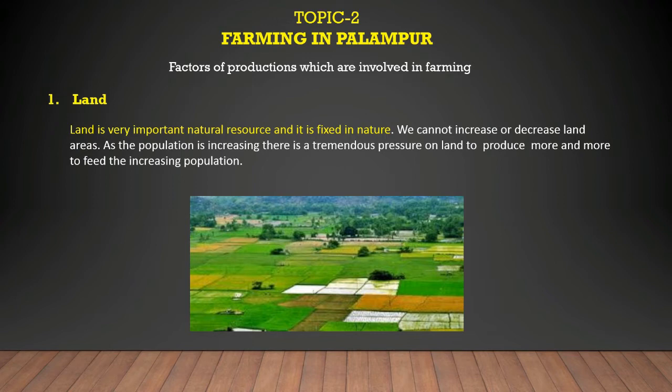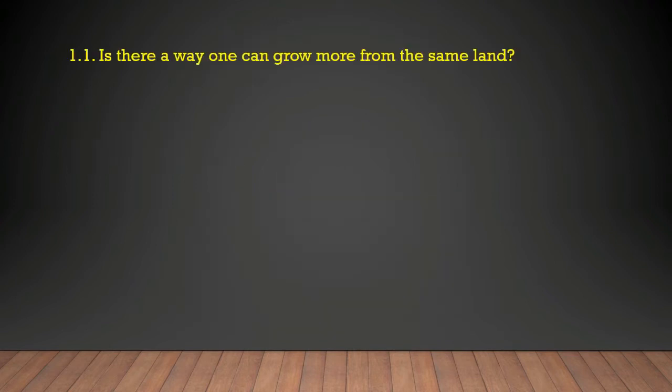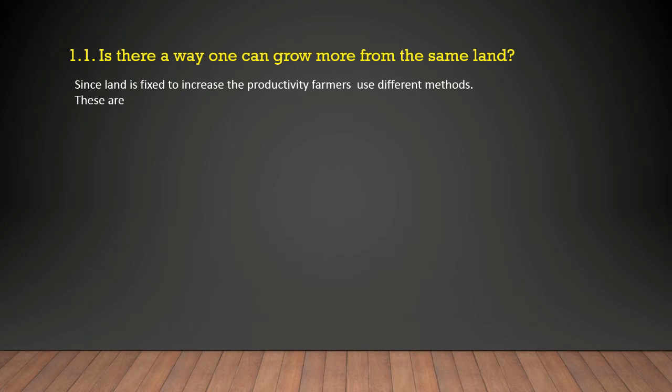Is there a way one can grow more from the same land? As the population is increasing and land is fixed, to fulfill the food needs of the growing population, farmers are using different methods so that they can produce more and more from the fixed land they have. Since land is fixed, to increase productivity, farmers use different methods.